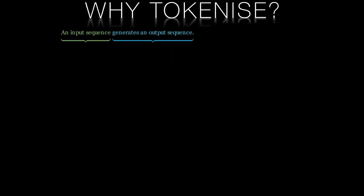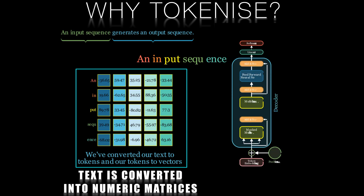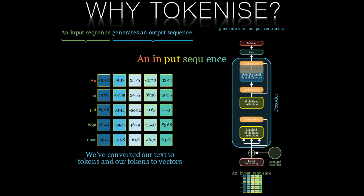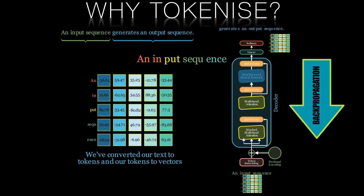Let's recall why we tokenize. Natural language models need to be fed numeric data. They can operate on this numeric data during training as they attempt to match a numeric output sequence to a given numeric input sequence. They use the error or loss between the calculated output and the target output to update their internal parameters to minimize the loss. They repeat this feedback loop using backpropagation multiple times until the weights converge and the model generates human-like responses to inputs.